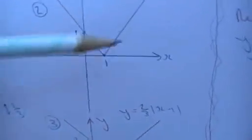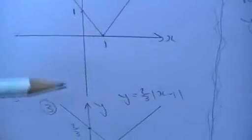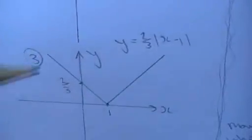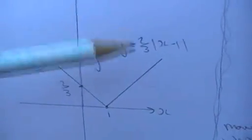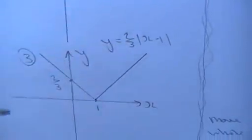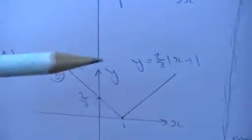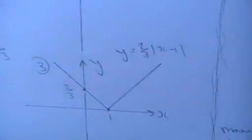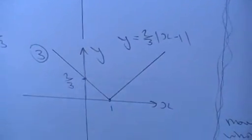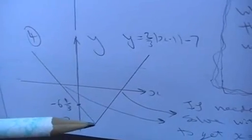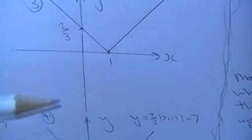So we've now got two-thirds modulus of x minus one. Our final stage is two-thirds modulus of x minus one minus seven, so we're going to get this entire graph and we're simply going to drop it by seven. If I drop it by seven, its minimum point now we can see is minus seven, and this two-thirds take away seven gives us minus six and one-third.